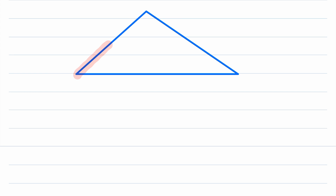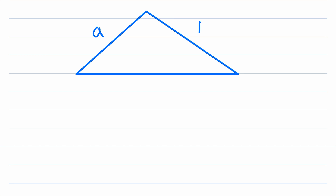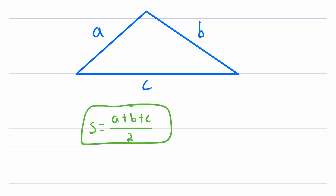Remember that the perimeter is the distance around the triangle. So let's say that this triangle has side lengths a, b, and c. Then the semi-perimeter s is equal to half of the perimeter. So to find it we just have to add a, b, and c to give us the perimeter of the triangle and then divide by two. So for a triangle with side lengths a, b, and c, this is how you find the semi-perimeter.